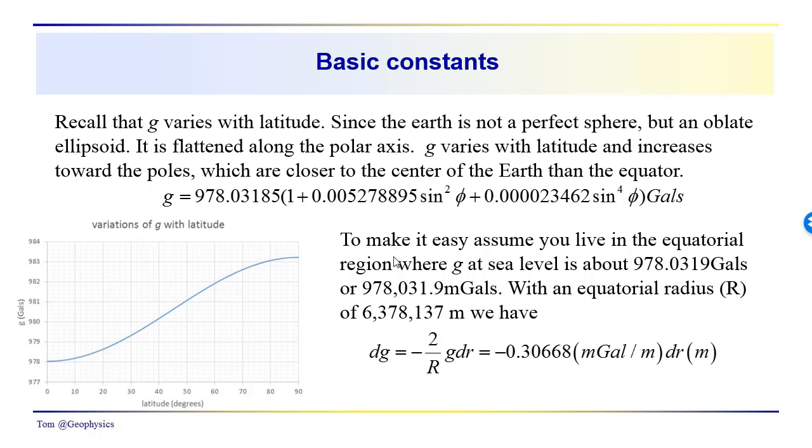So if we wanted to calculate the free air correction, we can make it easy. We'll just assume that we live in the equatorial region. And we have g in this equation. Basically when phi is equal to 0, all these terms drop out because the sine of phi is 0.